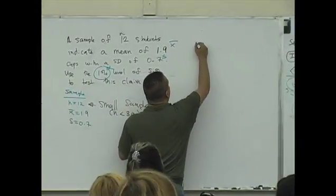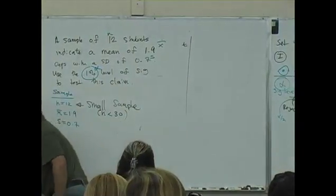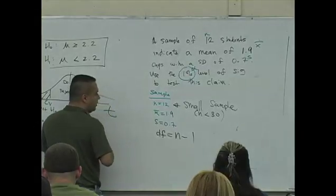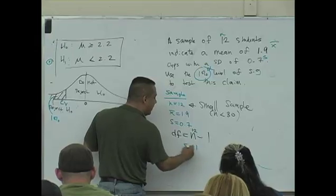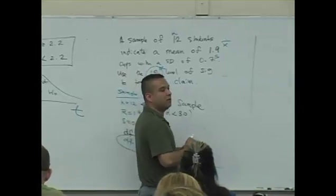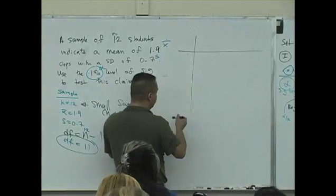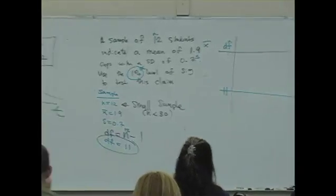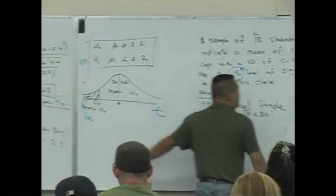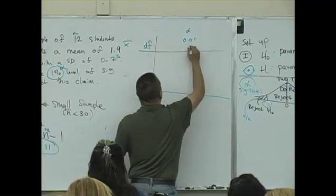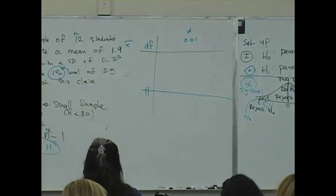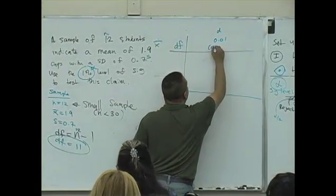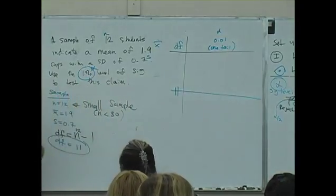If you remember how to use the T-table, it needs two pieces of information. For the row, you need the degrees of freedom, which is N minus 1. So with a sample size of 12, the degrees of freedom is 11 — look for the 11th row. Alpha is your column, and alpha is 1%. On the T-table, it has one-tail and two-tail columns. You're going to look for the one-tail column, since there is only one tail.